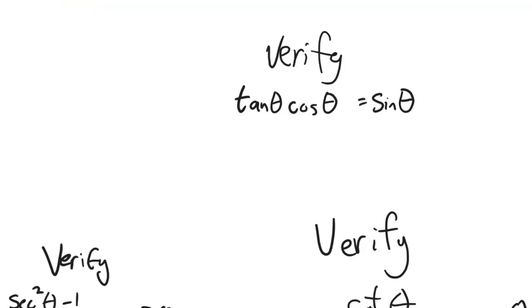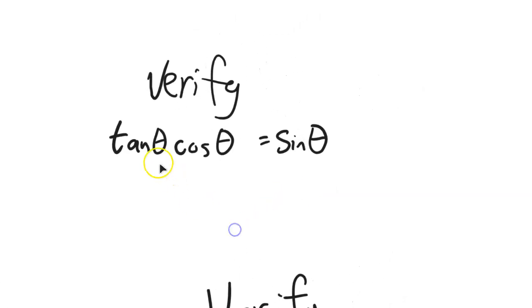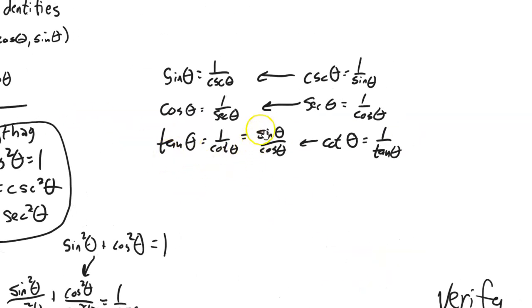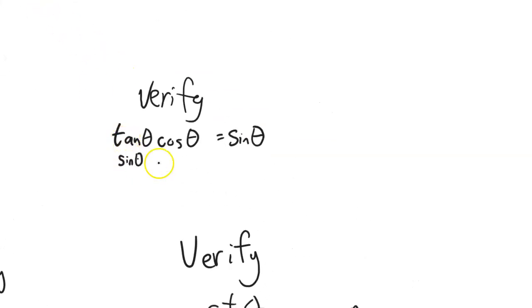When verifying, we pick one side and manipulate it to look like the other. For tangent theta times cosine theta: rewrite tangent as sine over cosine, multiplied by cosine. Cosine divided by cosine is 1, leaving just sine — and it's verified. Two key techniques: do the arithmetic in front of you, and put everything in terms of sine and cosine, which makes manipulation much easier.